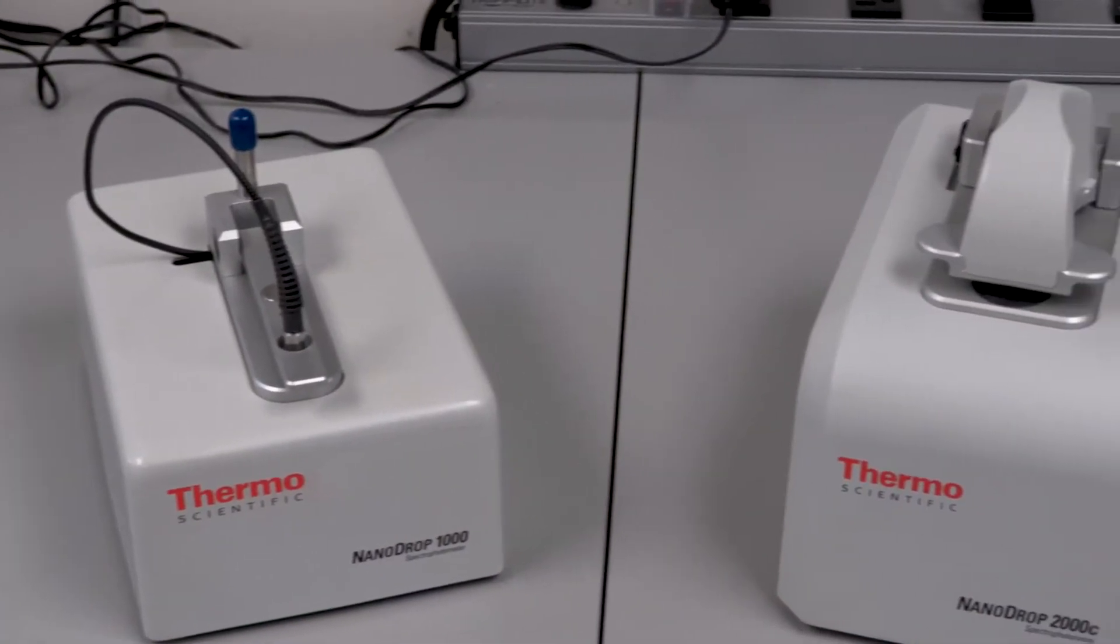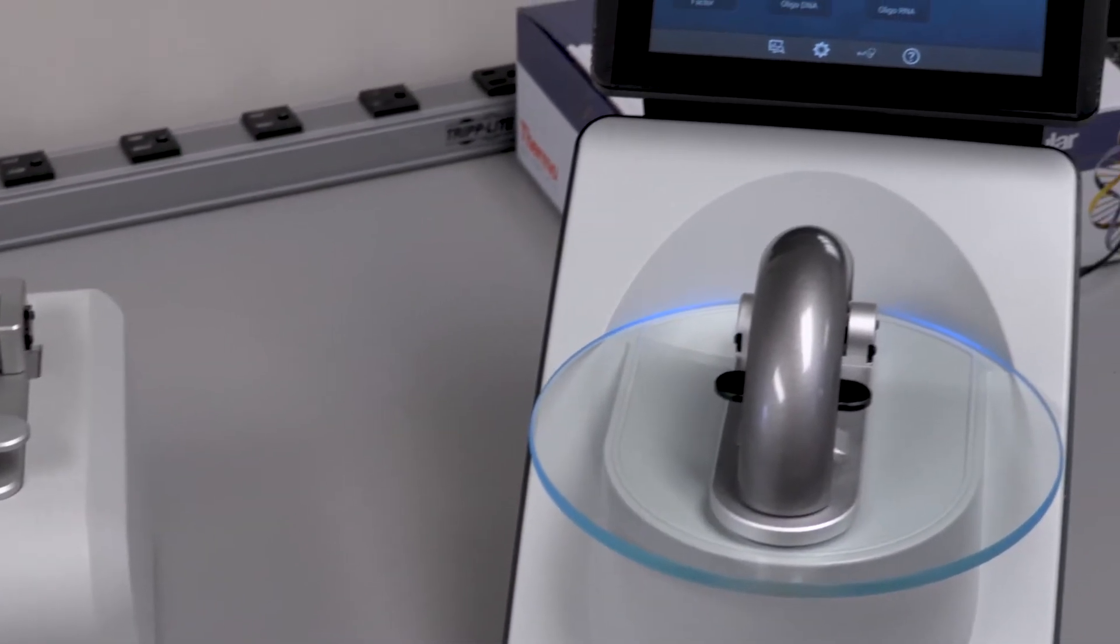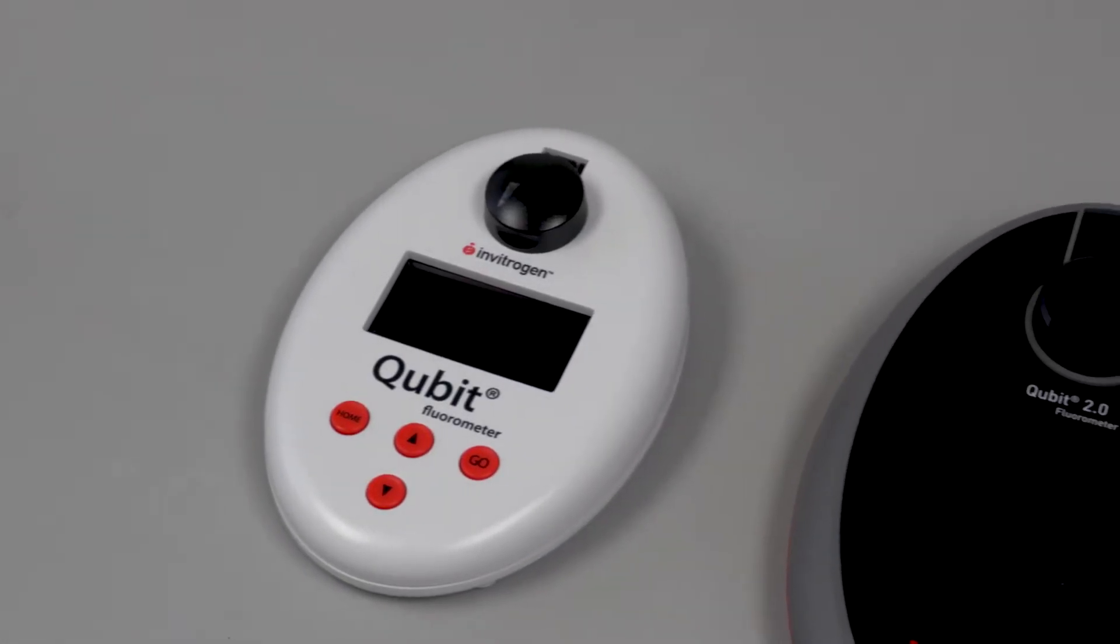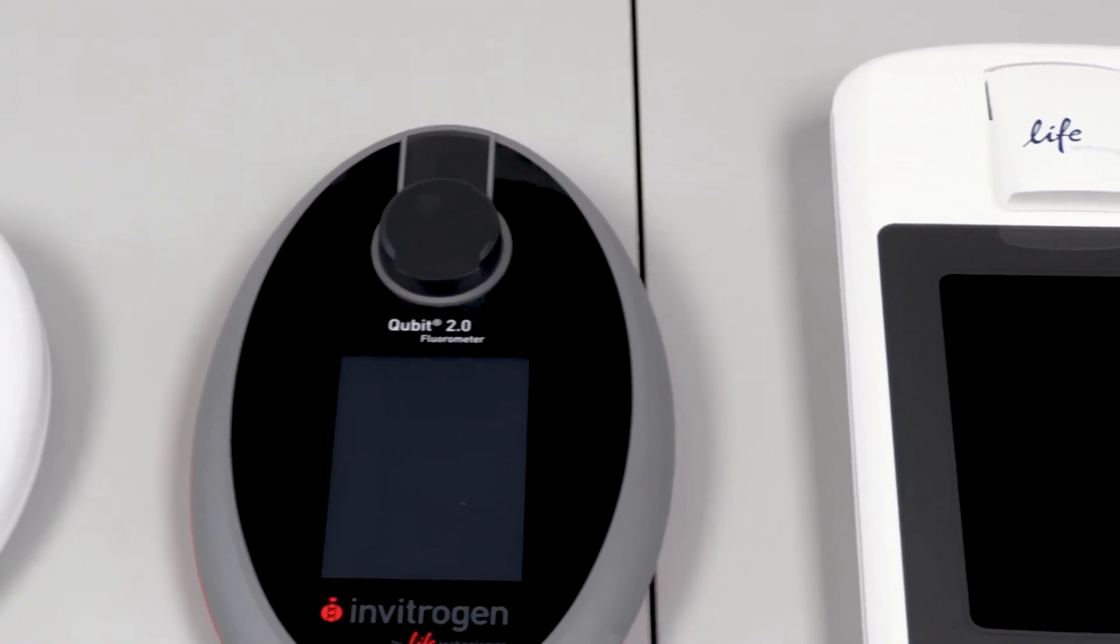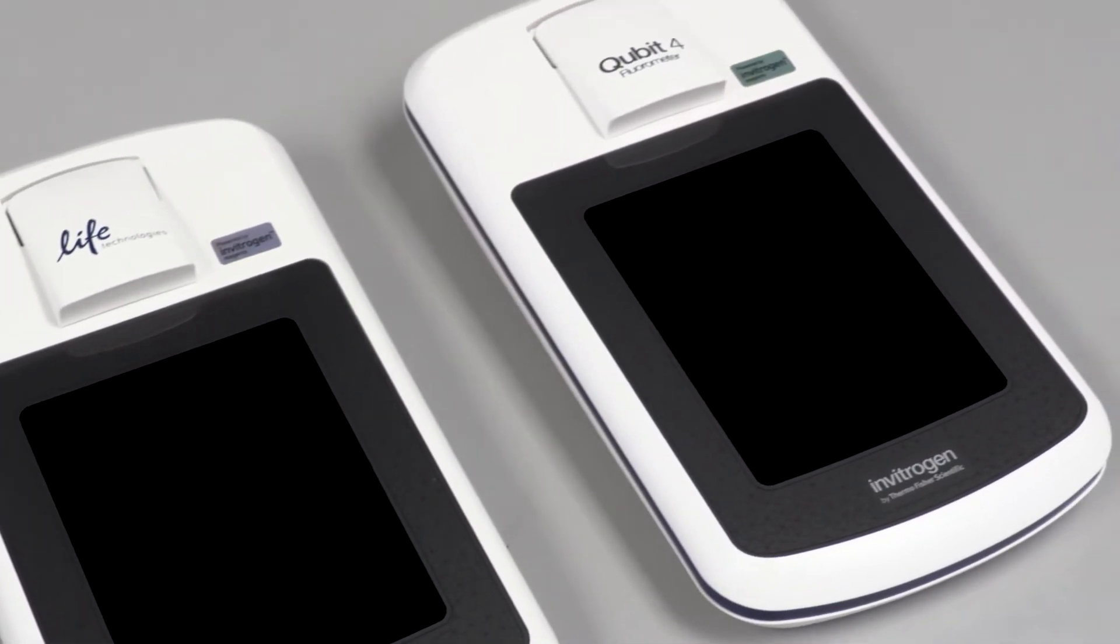NanoDrop spectrophotometers and Qubit fluorometers have been the gold standard in nucleic acid quantification for years. Both of these platforms have evolved to meet the stringent sample quality demands of molecular biology research. In addition to concentration, combining these two techniques gives researchers an accurate picture of their sample. Detect degraded RNA before RT-qPCR reactions, ensure enough template is used in TaqMan assays, and that the template is free from contaminants such as phenol that can potentially harm sensitive polymerases.